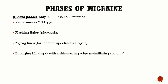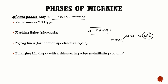There are four phases of migraine. The first is the aura phase. Aura is present in only 20–25% of migraine patients and is usually short-lived, lasting less than 30 minutes. There are two types of aura: visual aura, which is the most common type, and aura presenting with certain neurological deficits or symptoms.